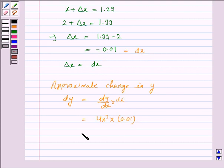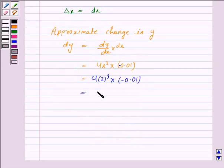Now x is 2, so we have 4 into 2 cubed into minus 0.01. So this is equal to 4 into